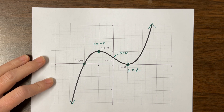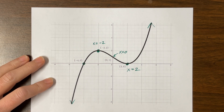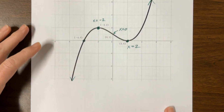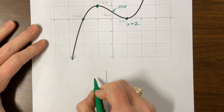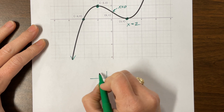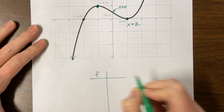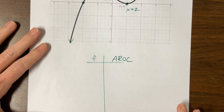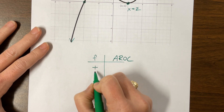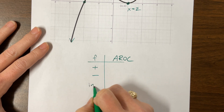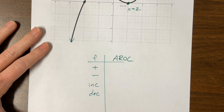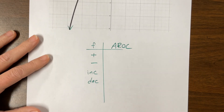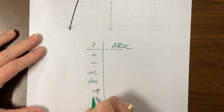We want to talk a lot about the average rate of change and what it's doing. We drew a table in class, and I think this can be really helpful. We can talk about what the function is doing, and then we can talk about what the average rate of change is doing. The function can be positive or negative, increasing or decreasing, and we can say it is concave up or concave down.